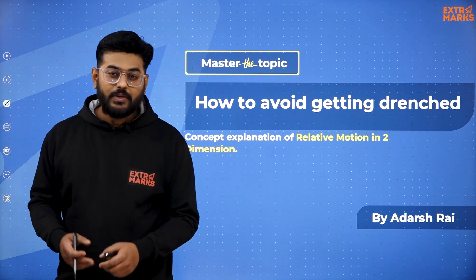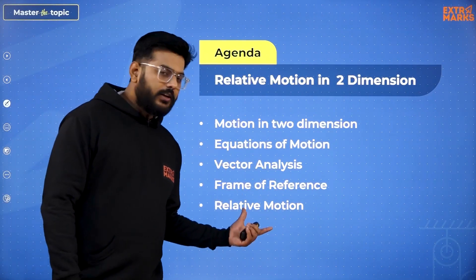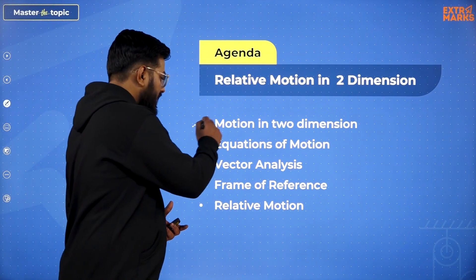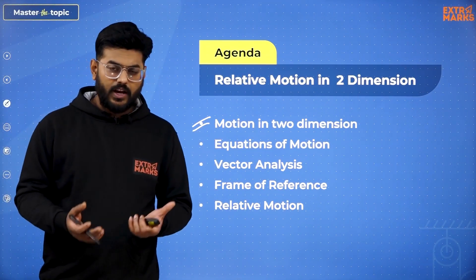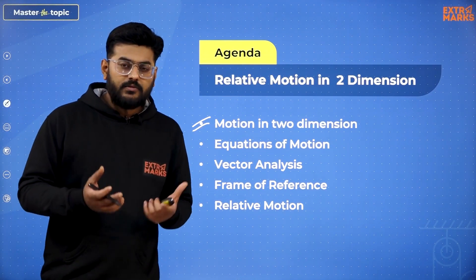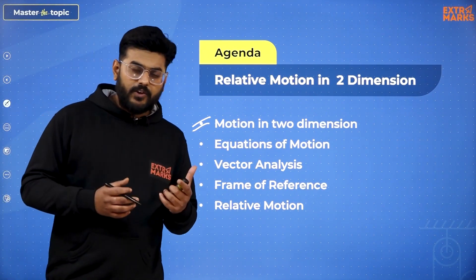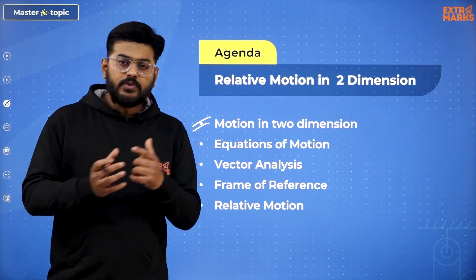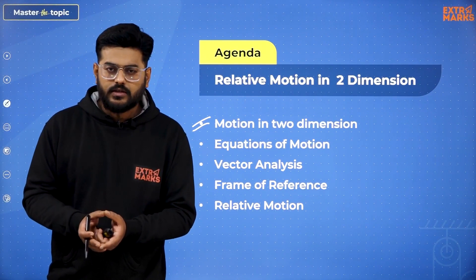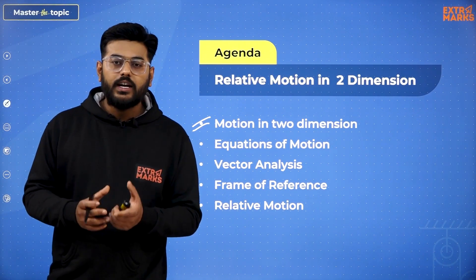It is not a simple question and we'll be dealing with so many other concepts related to this. I just want to give you how many things we are going to discuss. So we'll be discussing motion in two dimensions, then vector analysis, vector summation of two vectors, subtracting vectors and finding how the resultant vector comes out. Then I'll also be referring to frame of reference, observing things from different frames. At the last, I'll apply what relative motion actually is and how it can help us in finally answering the question — how to avoid getting drenched.